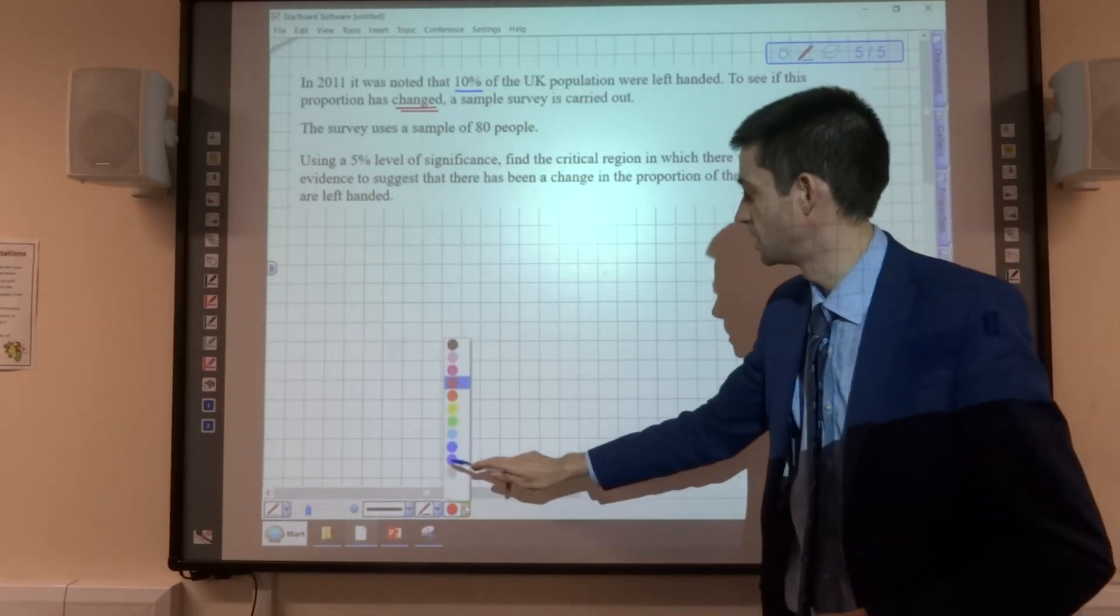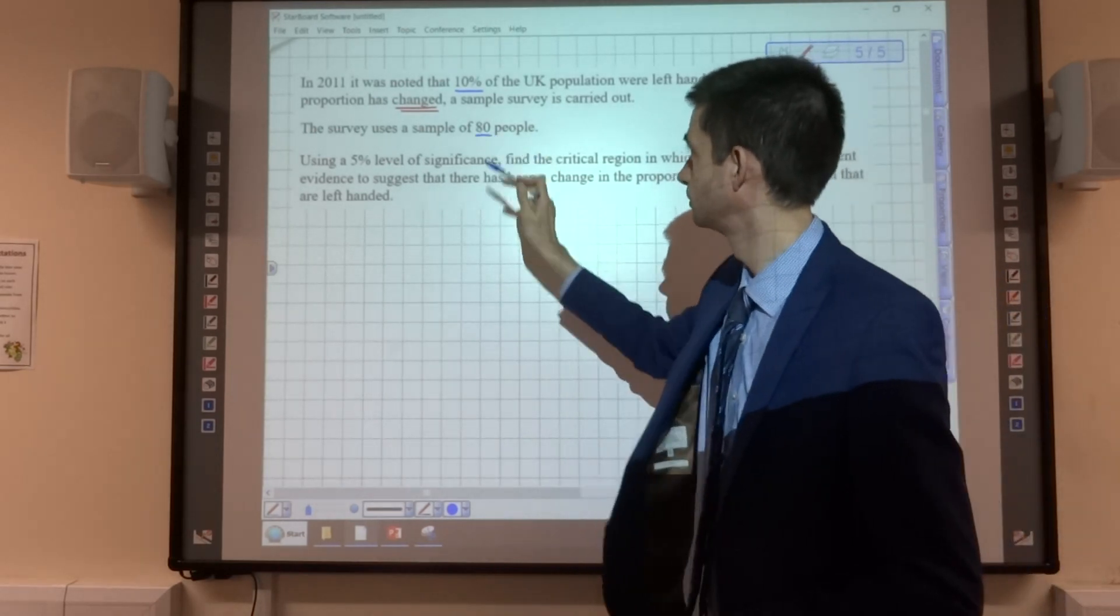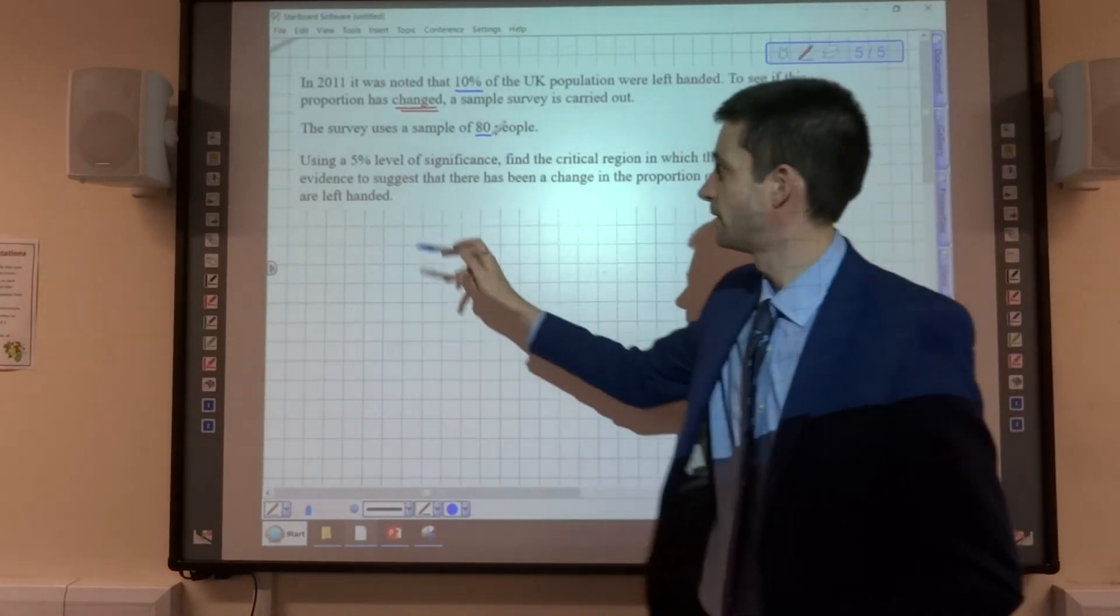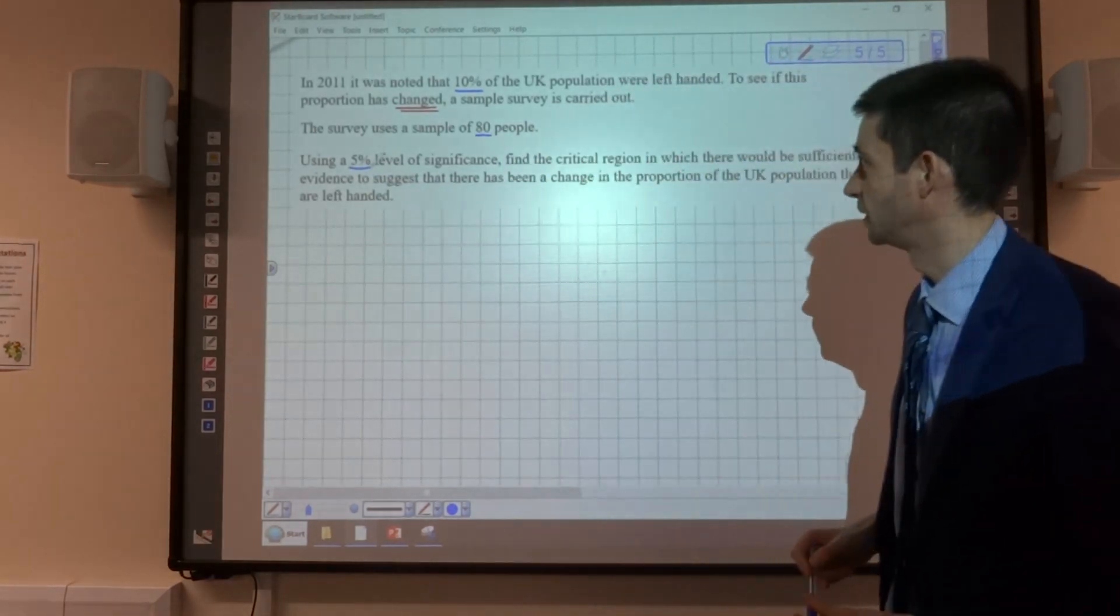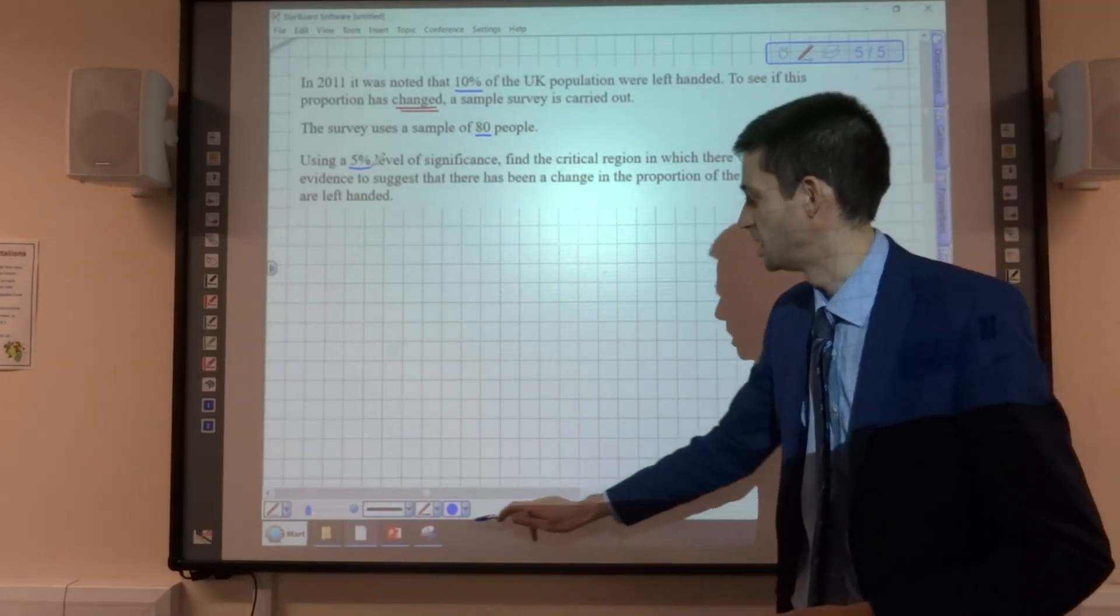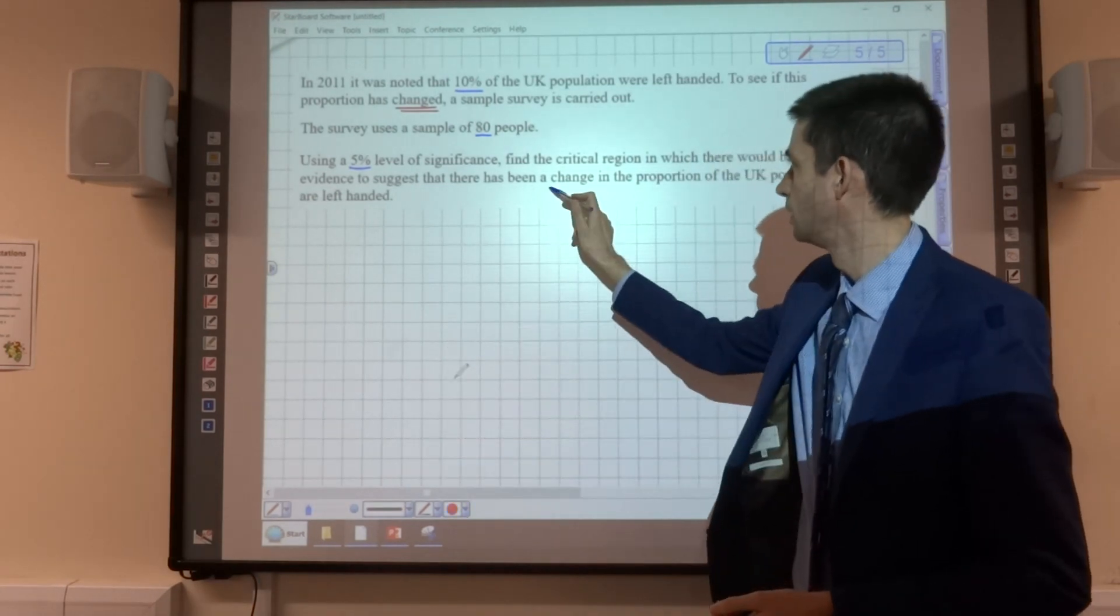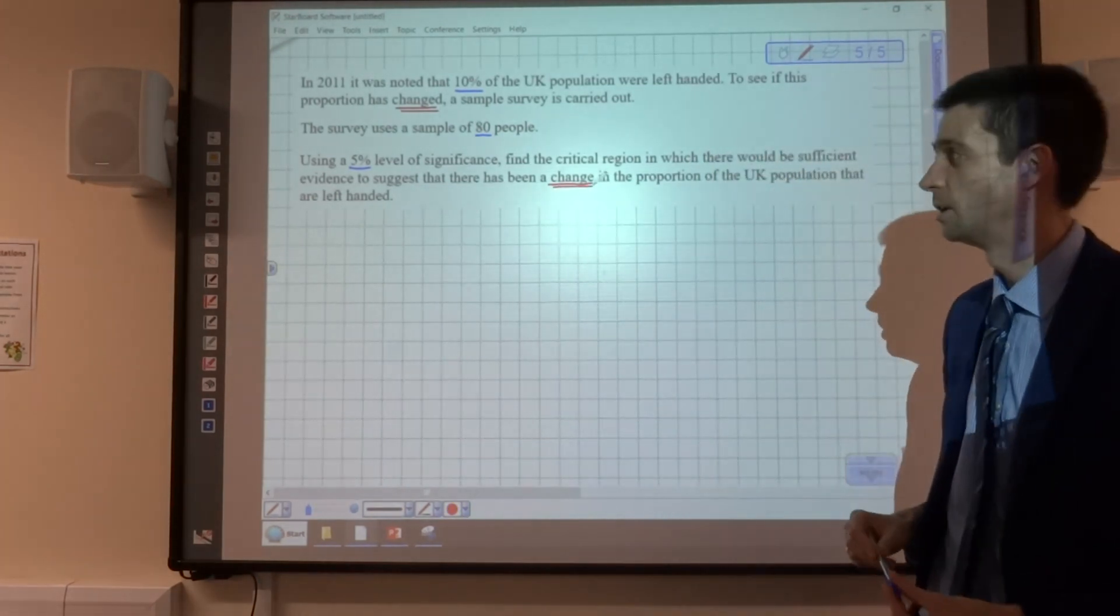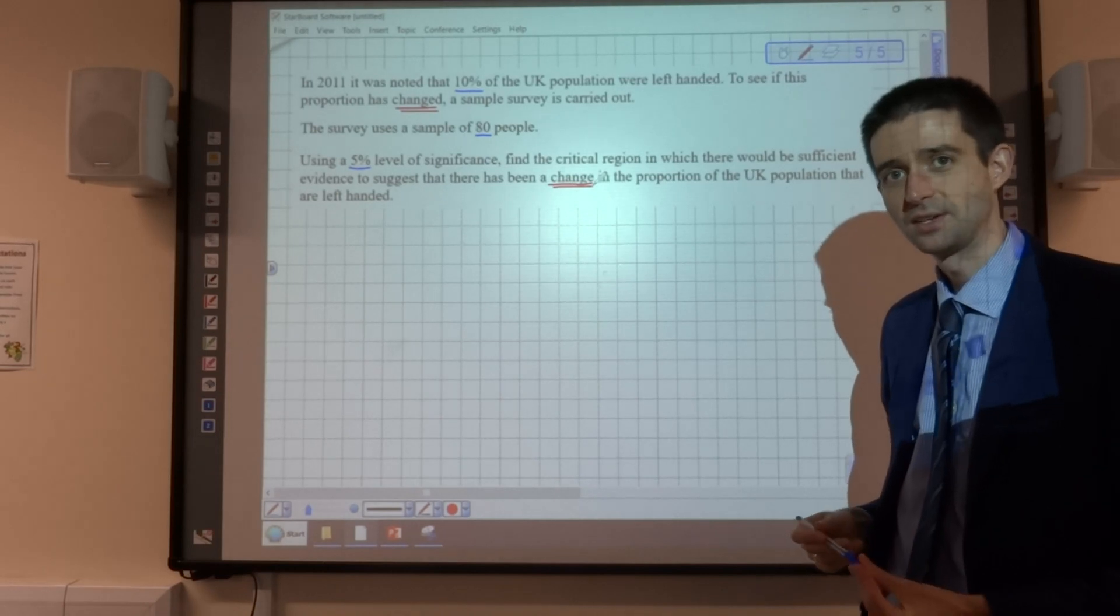The survey uses a sample of 80 people, using a 5% level of significance, find the critical region in which there will be sufficient evidence to suggest that there has been a change in the proportion of the UK population that are left-handed.